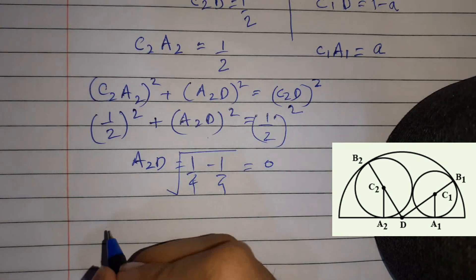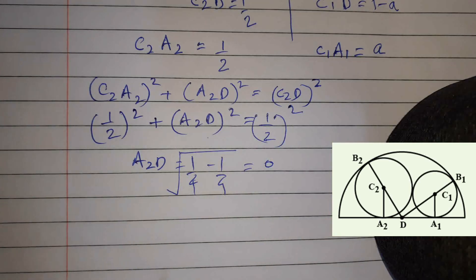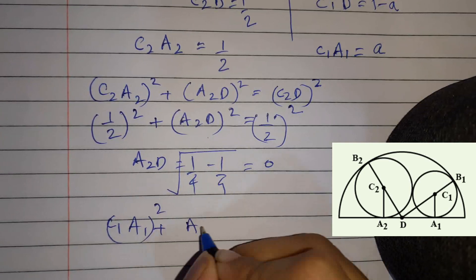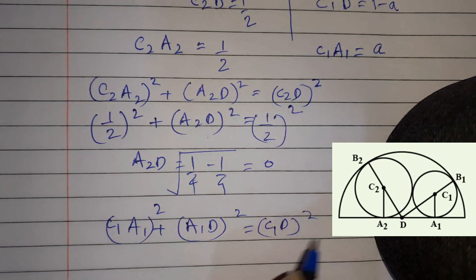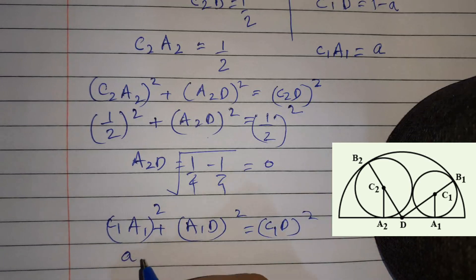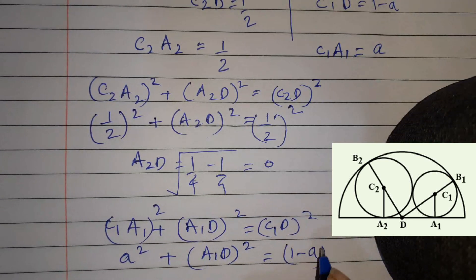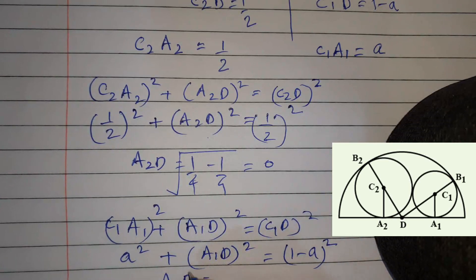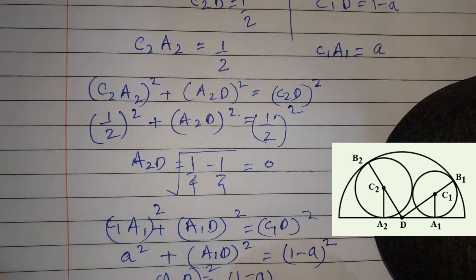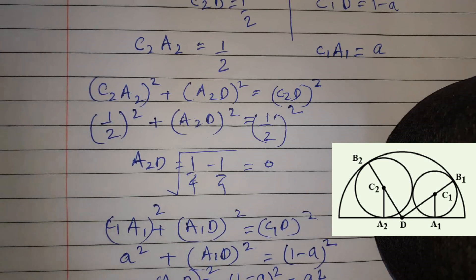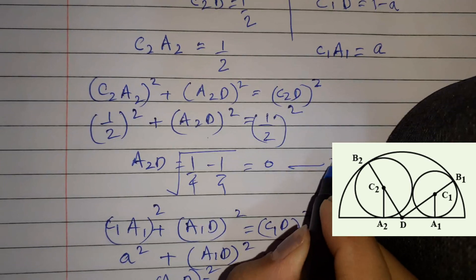Similarly, applying the Pythagorean theorem to triangle C1, A1, D: C1A1² + A1D² = C1D². So a² + A1D² = (1 - a)² = 1 - 2a + a². The a² terms cancel, giving A1D² = 1 - 2a, so A1D = √(1 - 2a).